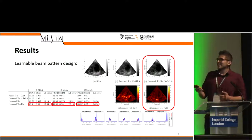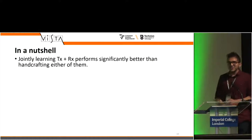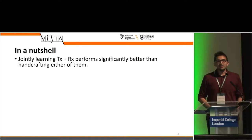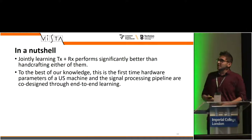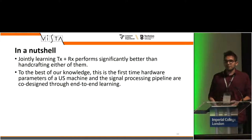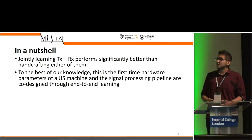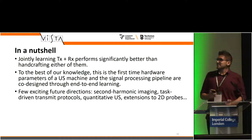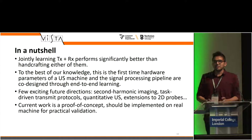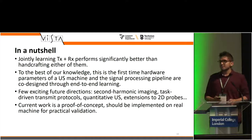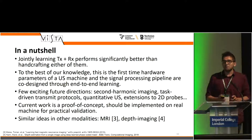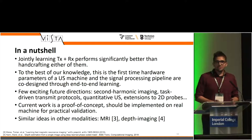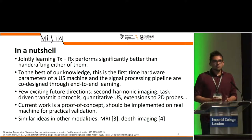More results are in the paper and the poster. In a nutshell, if you have an active imaging pipeline, you should optimize both TX and RX together — both the acquisition and the reconstruction jointly. This is the first time any hardware parameter in an ultrasound machine has been optimized jointly with the network, and it opens many exciting directions. We didn't implement it on a practical machine yet, but that is to be done. We also showed in other modalities that co-designing both acquisition and reconstruction leads to significantly better results.